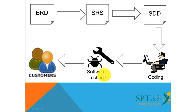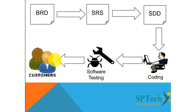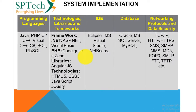Once coding is done using any programming language, the code will be tested — which is called software testing. Once software testing is successfully completed, we hand over the software to the customer. The customer will then perform one more level of testing called user acceptance testing, or UAT.